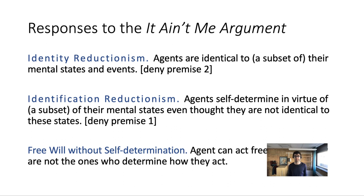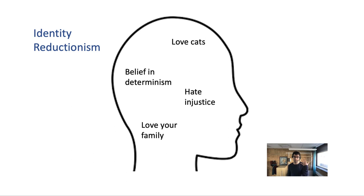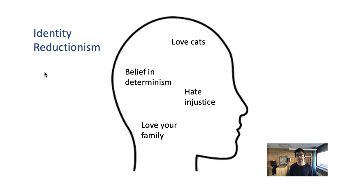Regarding identity reductionism: you find yourself with many mental states — you love cats, believe determinism is true, hate injustice, love your family. Identity reductionism is the idea that you are simply identical to a subset of all your psychological traits. There's a subset of mental states such that you exist as long as these states exist; if they are lost, you no longer exist. You're just identical to these mental states.